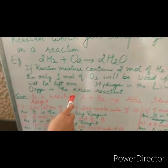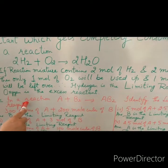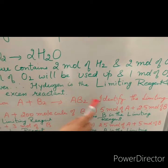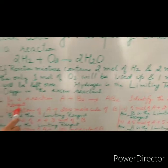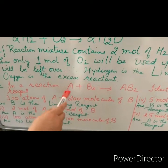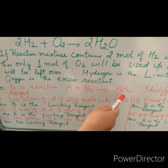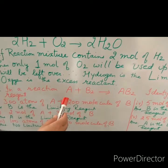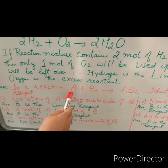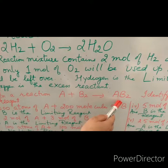To understand this concept of limiting reactant, let us see this numerical. In a reaction A + B₂ → AB₂, identify the limiting reagent. Here 1 mol of A reacts with 1 mol of B₂ to give AB₂. We can also say that 1 atom of A reacts with 1 molecule of B₂ to give AB₂.